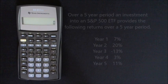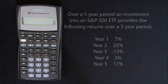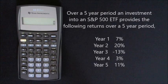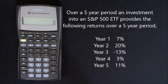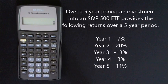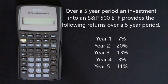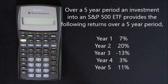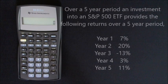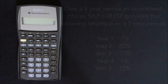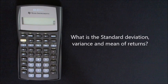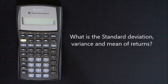We'll use an example to help us. Over a five-year period, an investment into an S&P 500 ETF provides the following returns: Year 1, 7%; Year 2, 20%; Year 3, minus 13%; Year 4, 3%; and Year 5, 11%. So what is the standard deviation, the variance, and the mean of the returns of this investment?